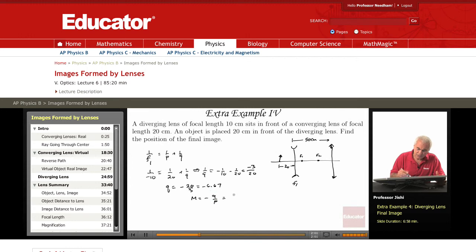Because the magnification M is minus Q over P. So minus, minus 6.67, so 6.67 over P, and P is 20. So it's one-third. So the image is one-third the object, and it's upright.